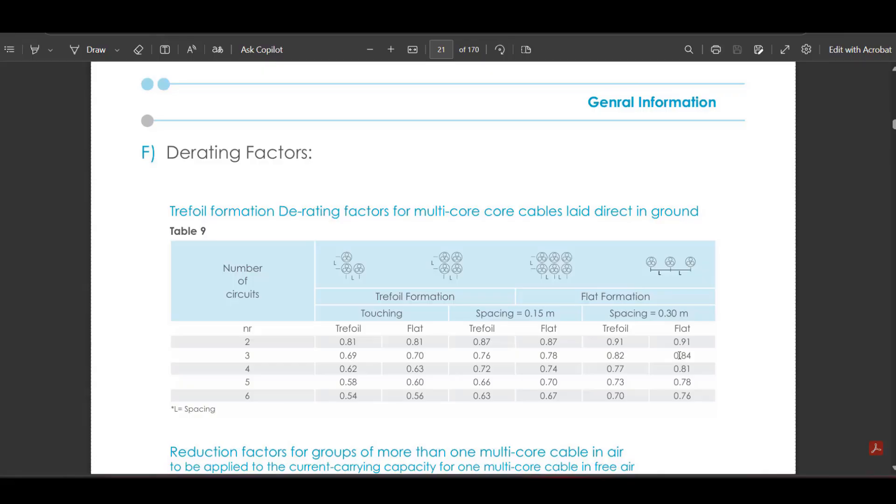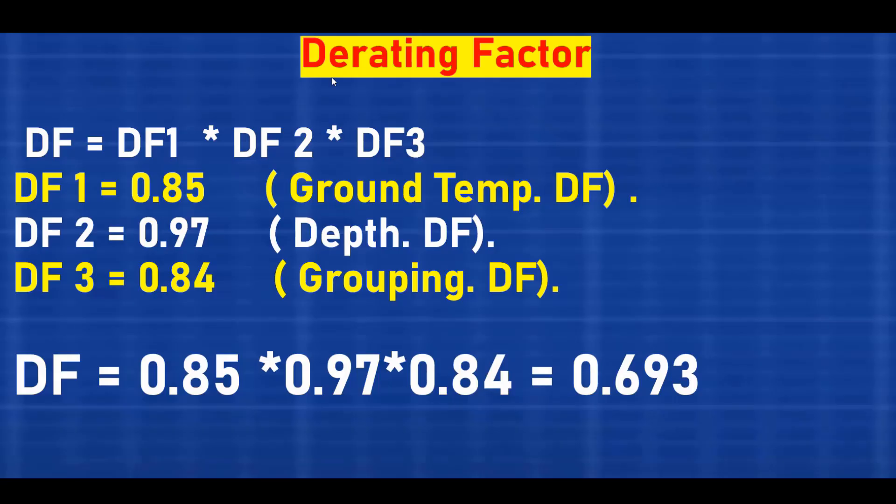Now, let's calculate the total derating factor. By applying the formula, we get total derating factor equals factor 1 multiplied by factor 2 multiplied by factor 3. So, total derating factor equals 0.85 multiplied by 0.97 multiplied by 0.84, which equals approximately 0.693.